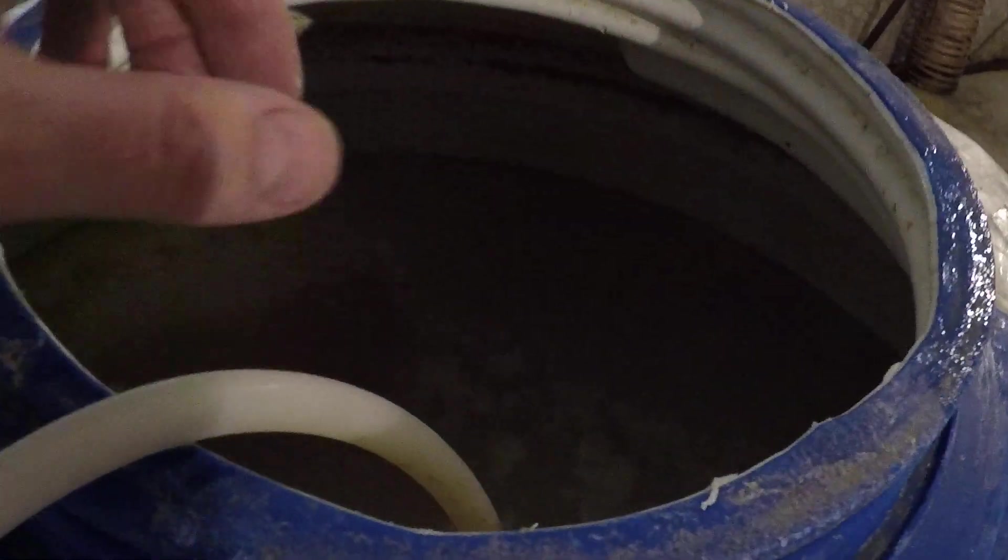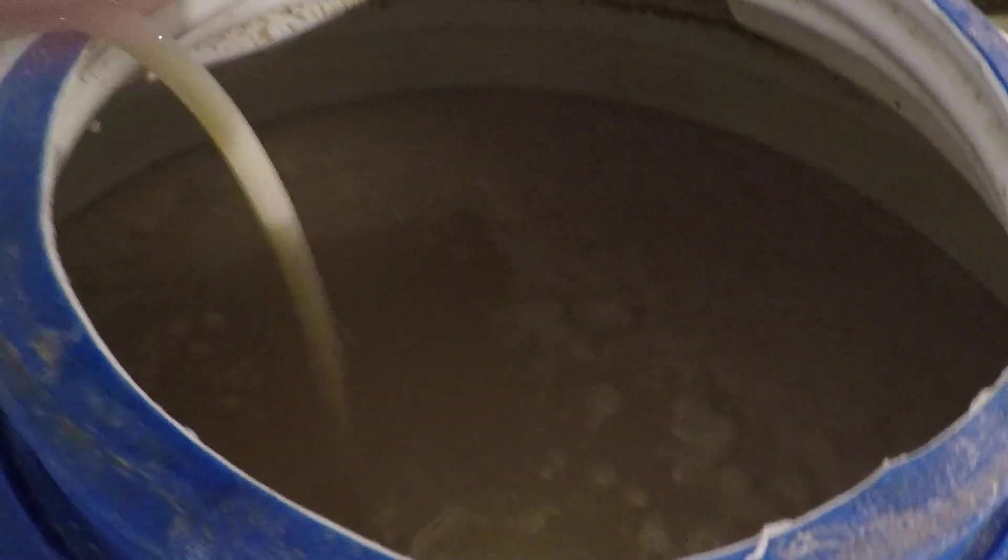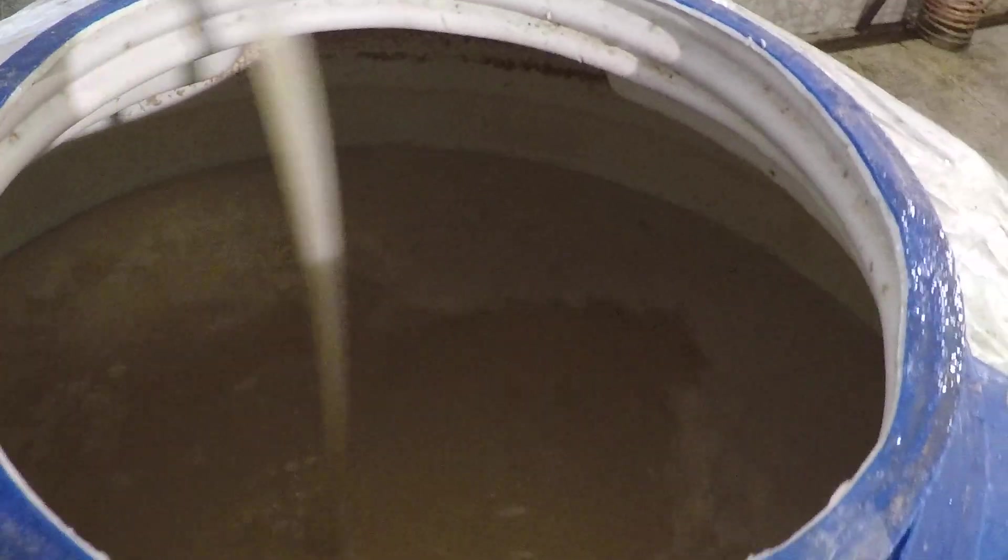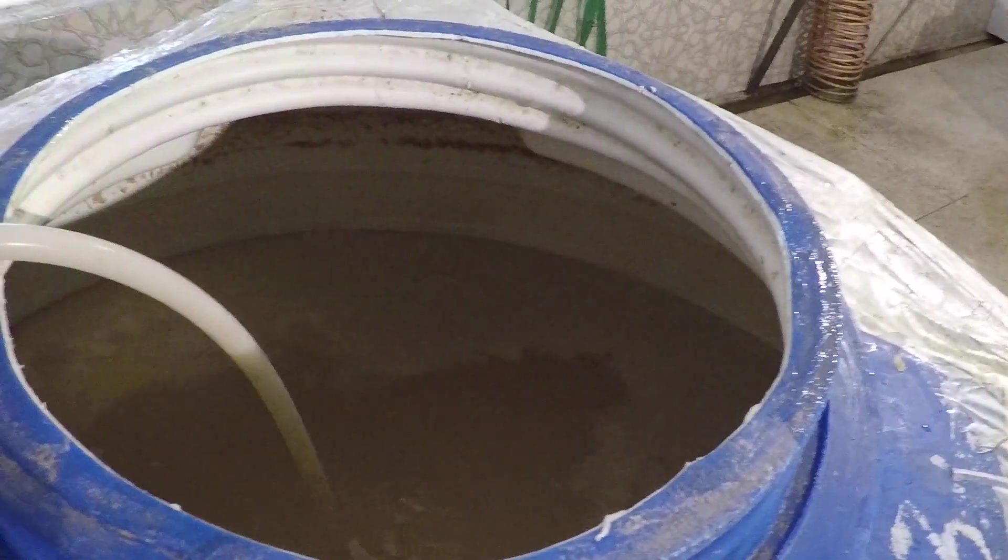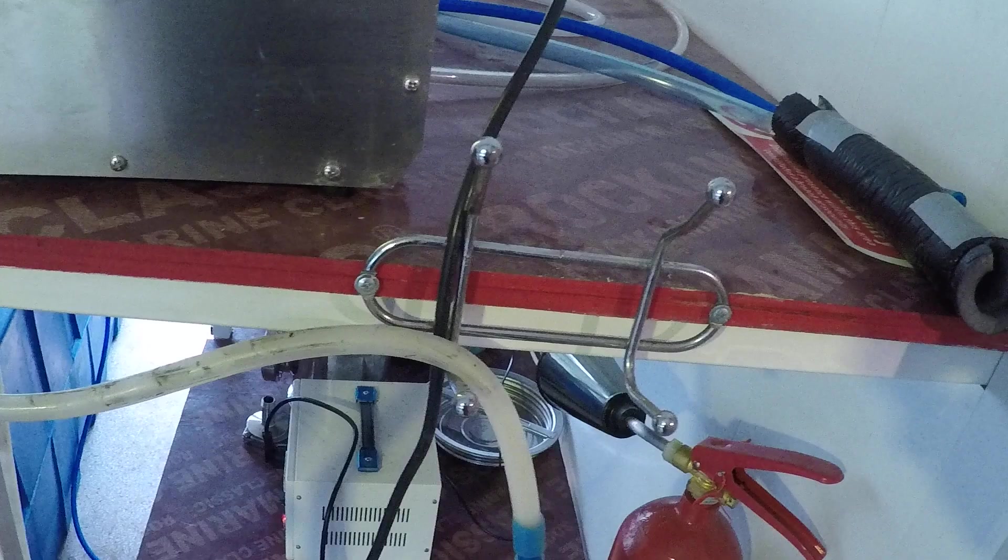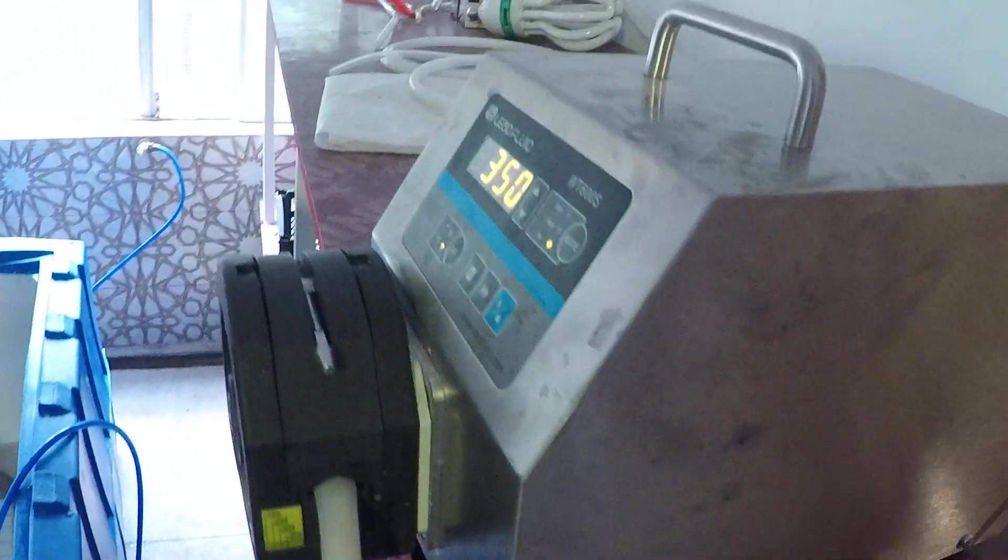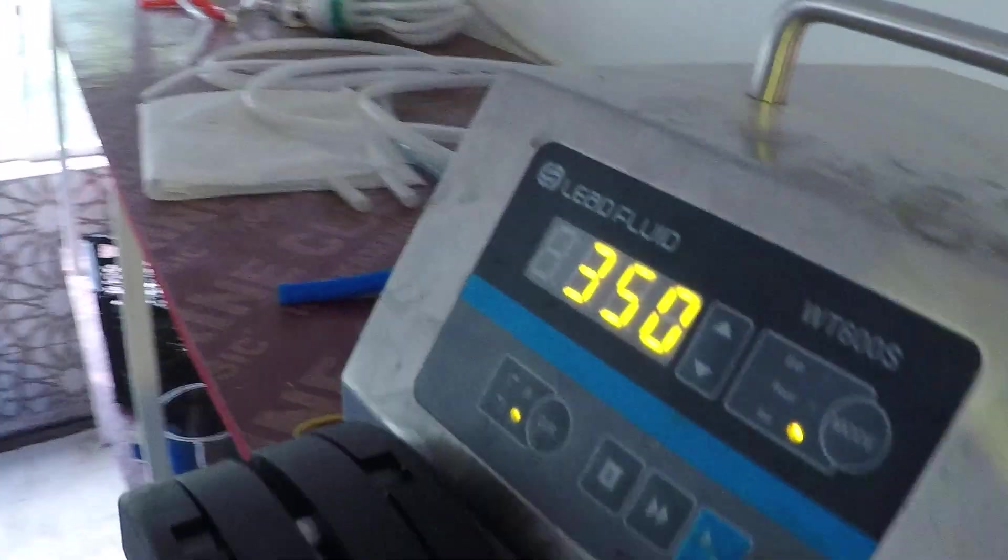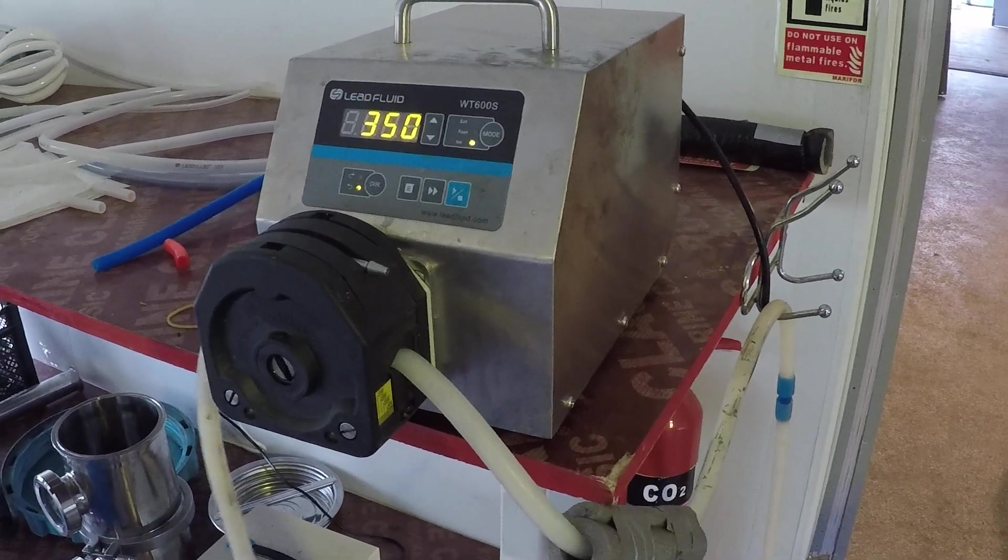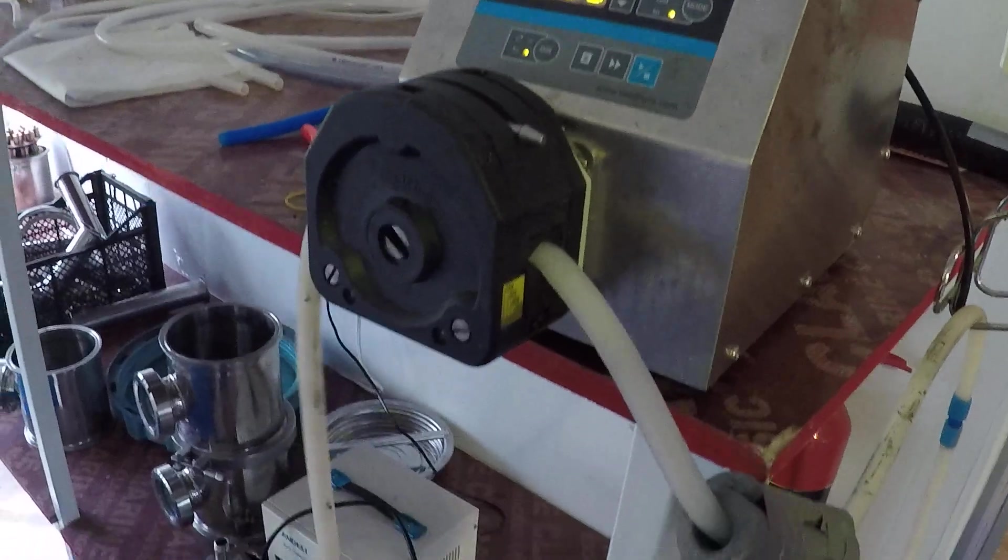We are taking the wort through the filter using this hose, pumping it with a peristaltic pump at 350 RPM. This is around 3.2 liters per minute.